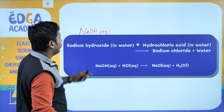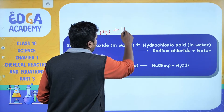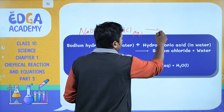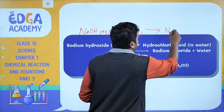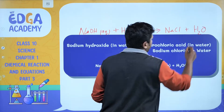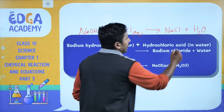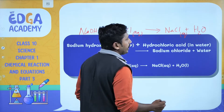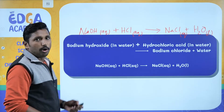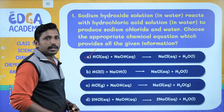So I write NaOH in the aqueous state plus hydrochloric acid HCl, that is also in the aqueous state, gives sodium chloride NaCl plus water H2O. Sodium chloride is produced in water, so it is also in the aqueous state, and water being a liquid can be represented as L. So this is the correct representation, and from our options I can choose option A as the right choice.